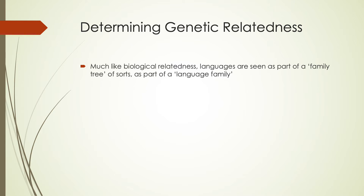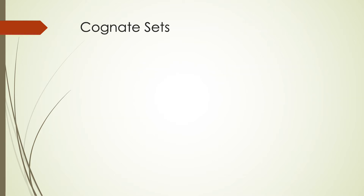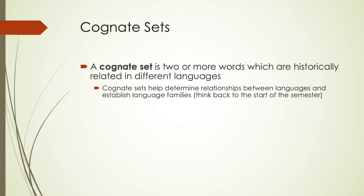We have a couple of ways to determine this, though it can be much more complicated. The most common tools are: first, looking for cognates and cognate sets to find similarities between languages, and then using what's known as the comparative method to figure out what the language prior to these languages would have actually looked like. The first step is to start by finding cognates. Cognates or cognate sets are words that have historical relationships with each other in different languages, which helps us determine relationships between languages and establish language families.